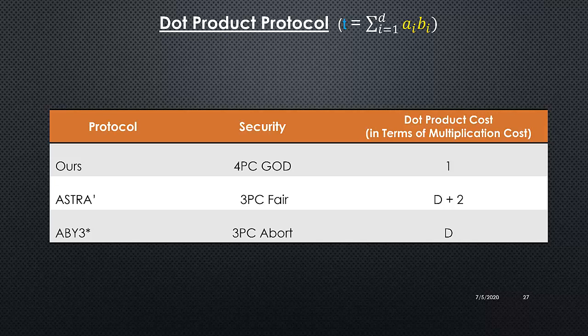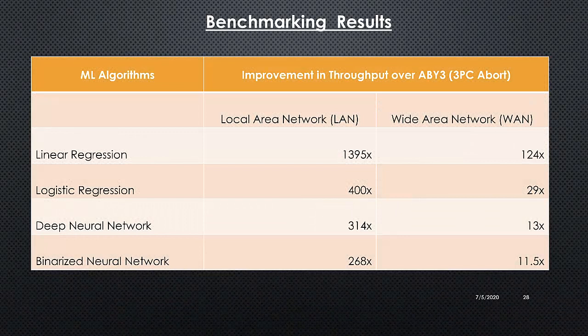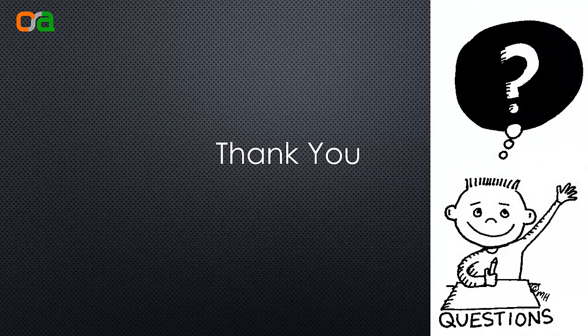In the benchmarking results, we give throughput improvements over ABY3 — throughput being the number of queries processed per second or per minute. For linear regression under the LAN setting, we are around 1300 times better; in the WAN setting, around 120 times better. Similarly for logistic regression we have much higher improvements, and for deep neural networks and binarized neural networks as well. Thank you — that was this presentation. If you have any questions please feel free to ask, and the full version is available on ePrint.